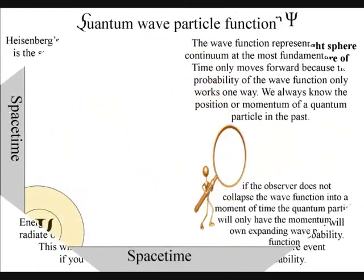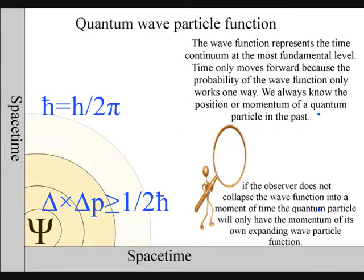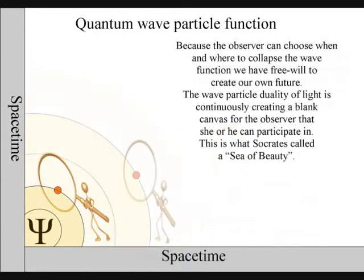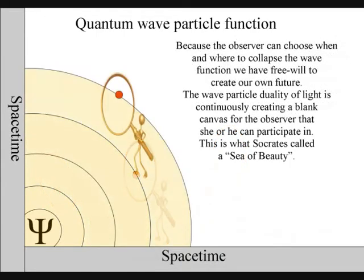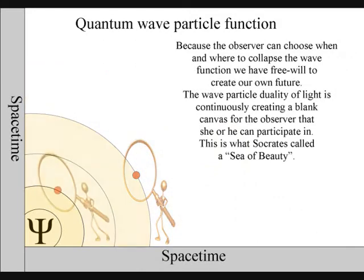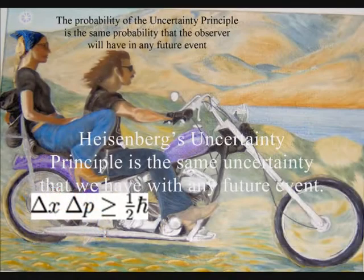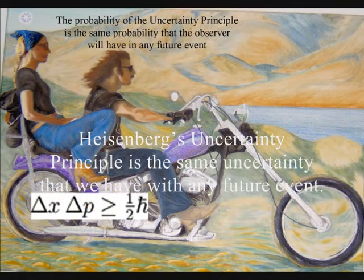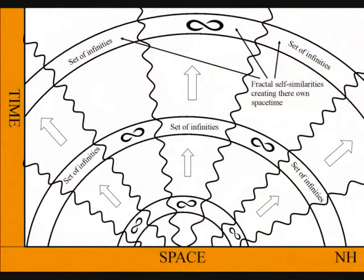It is because we can choose where and when to come in contact with the wave function, collapsing the light waves of electromagnetic radiation into quantum particles or photons, that we have free will to create our own future.